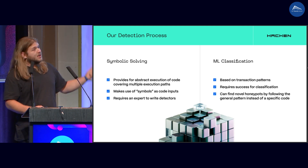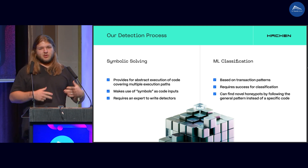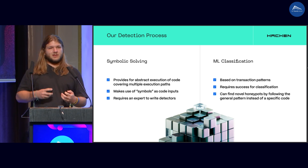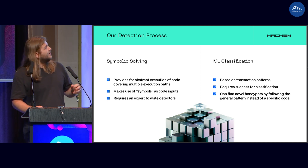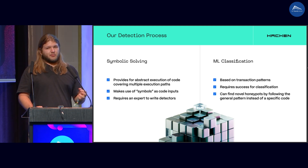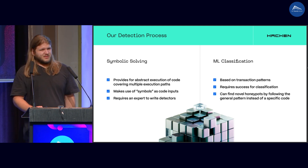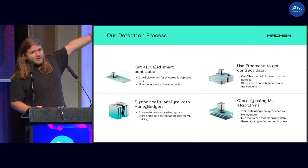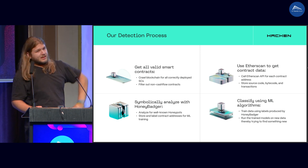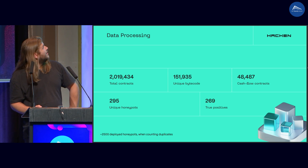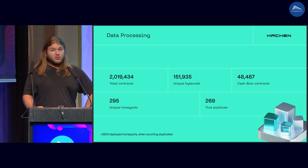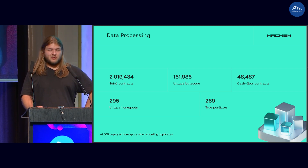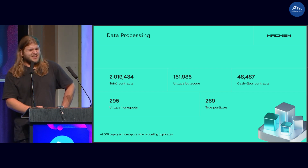How do we detect them? Symbolic solvers — heuristics, as was mentioned yesterday. You need to be an expert and know what you're searching for, then create a solver to check for specific scenarios. Option two is transaction patterns, which the incident detection crew can use — but that only works for contracts that have already been exploited. The standard process: get all the contracts, get all the data, generate training data using the symbolic tool, and classify using ML. In the period tested, there were about 2 million smart contracts, of which only 150k were unique. Right now there are about 600,000 unique smart contracts.